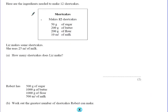Second example. Here are ingredients needed to make 12 shortcakes. Liz makes some shortcakes. She uses 25 milliliters of milk. How many shortcakes does Liz make?